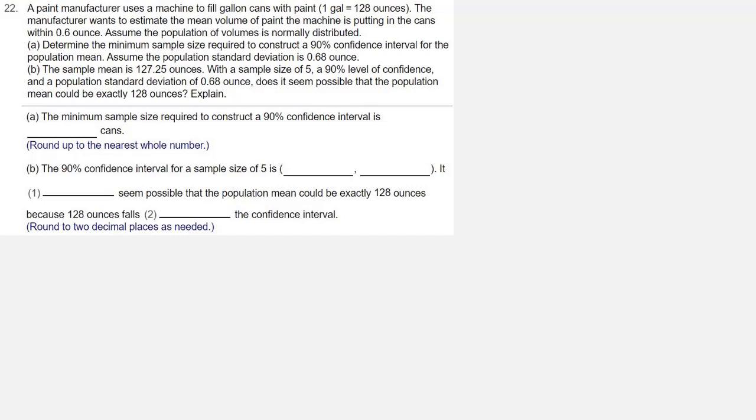Part B: The sample mean is 127.25 ounces. With a sample of size 5, a 90% level of confidence, and a population standard deviation of 0.68 ounce, does it seem possible that the population mean could be exactly 128 ounces? Explain. So the first thing we need to do here is find that minimum sample size for part A.